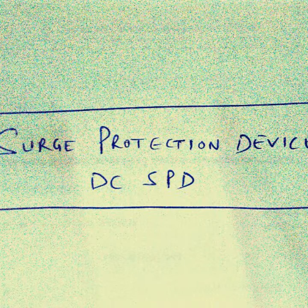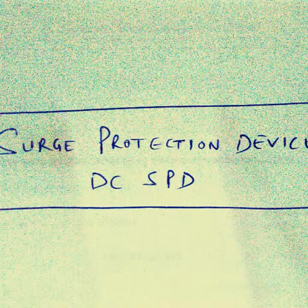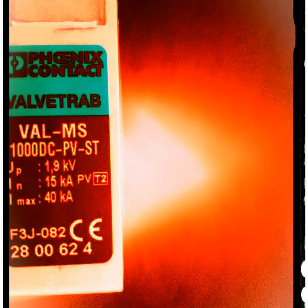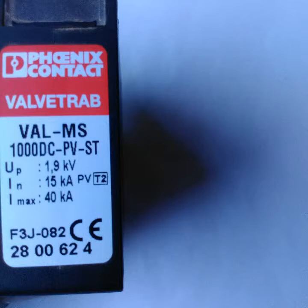You can see the image — this is a surge protection device which is used in the solar industry to protect electrical equipment. In this you can see it is written UP: UP means peak voltage, U means voltage, P means peak. Peak voltage is 1.9 kV.